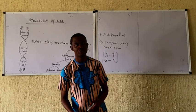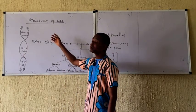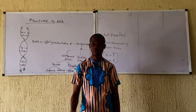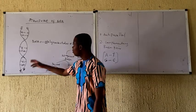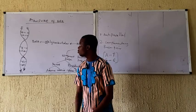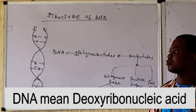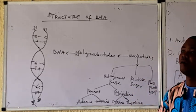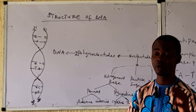Good day to you viewers, welcome to Biology Assets. Today we'll be making a brief look at the structure of DNA. If you are new to this channel, kindly subscribe and click on the notification button so that you will be timely notified anytime we post new videos. Back to our topic: the structure of DNA. DNA, also known as deoxyribonucleic acid, is the hereditary material responsible for the transmission of traits or characters from one generation to another. DNA is located in the nucleus of the cell.